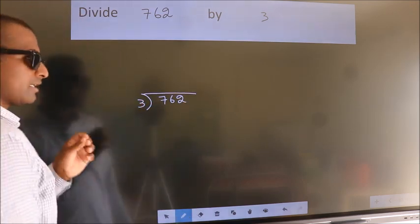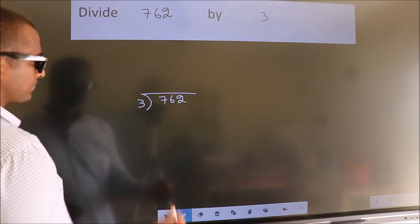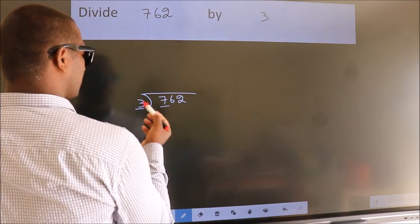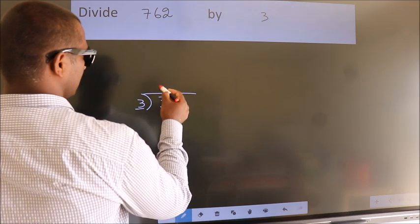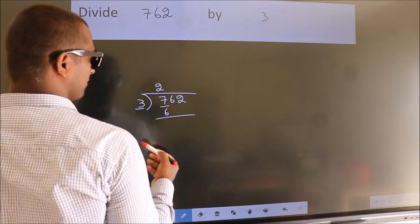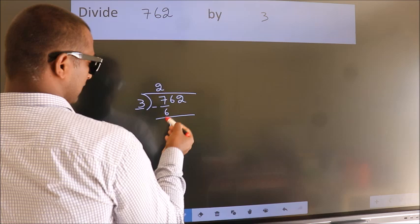This is step 1. Next, here we have 7, here 3. A number close to 7 in 3 table is 3 2s, 6. Now we should subtract and get 1. After this,